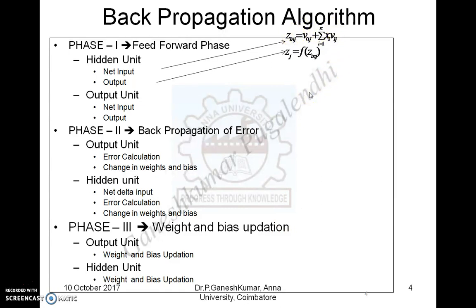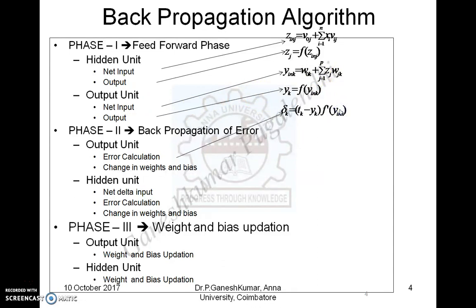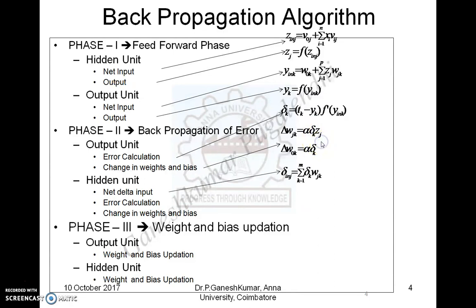For the output unit, the same net input calculation applies, followed by an activation function. The error is calculated as tk minus yk — that is, target minus actual output — giving the delta value. The change in weight is calculated as the product of the learning rate, the error value, and the corresponding node value. Input values are calculated and error values are updated accordingly.